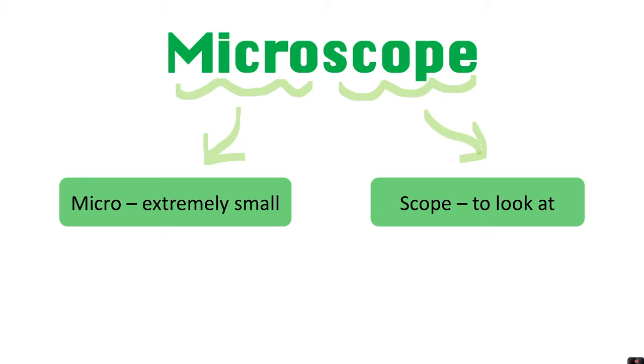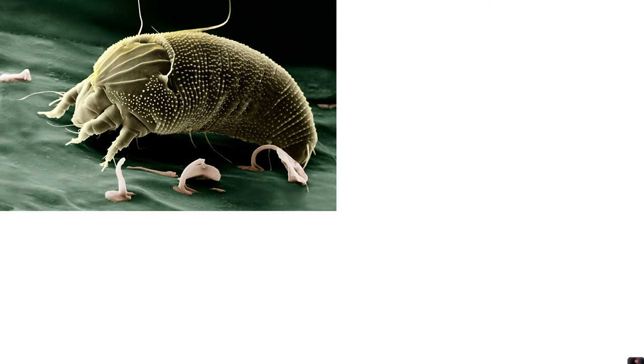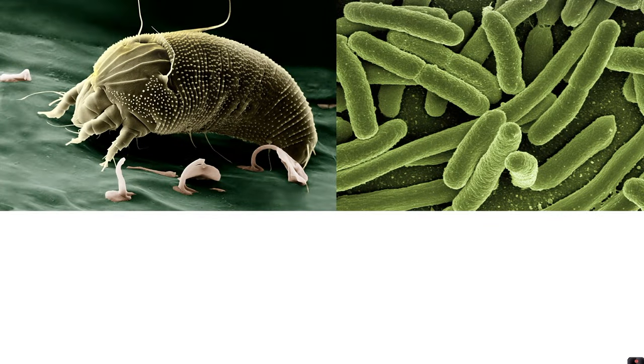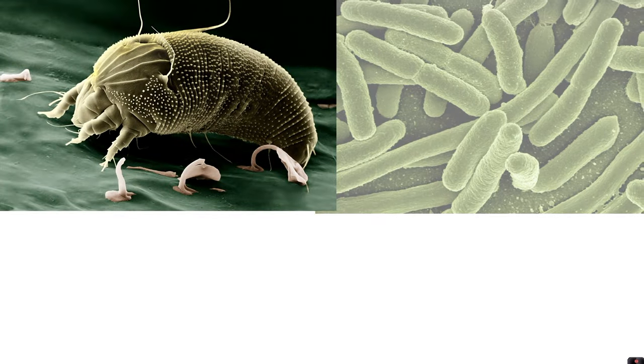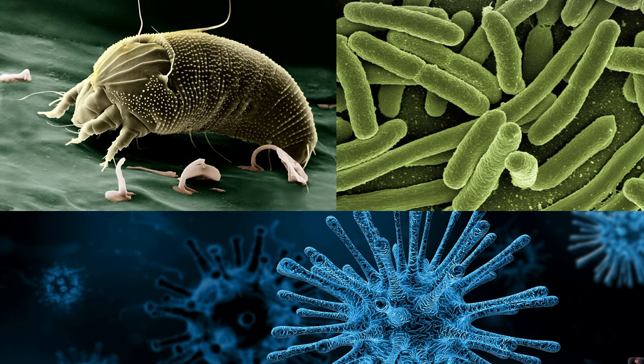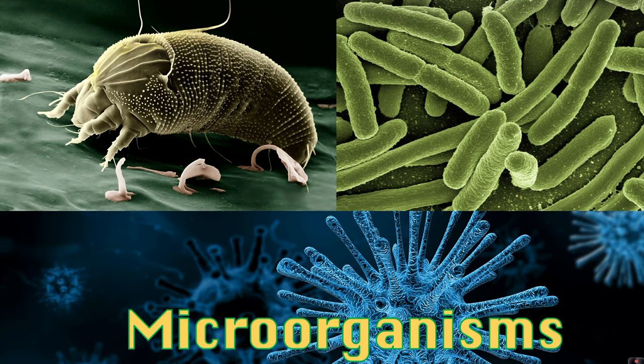Some examples of extremely small things that we might want to look at under a microscope include small organisms such as this mite in the image. It could be that we want to look at bacteria or maybe even a virus. Small organisms that we can't see with the naked eye are called microorganisms and hence we need a microscope to view these microorganisms.